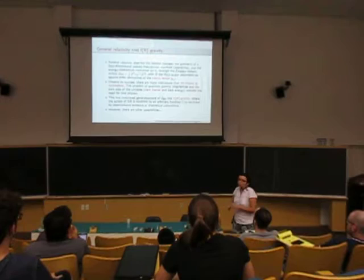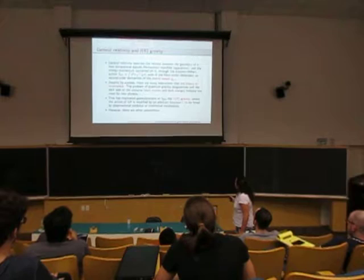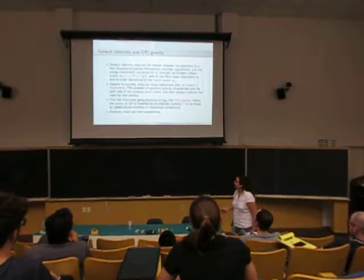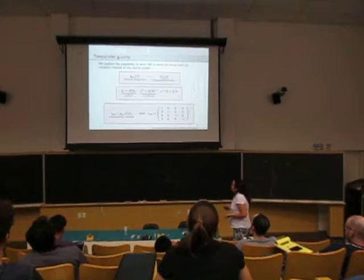This has motivated generalizations. You can generalize gravity in many ways. One of that is F of R gravity, which corresponds to generalizing this action by an arbitrary function to be fit by observational data or theoretical consistency. However, we have many other possibilities. One of them is to modify teleparallel gravity.